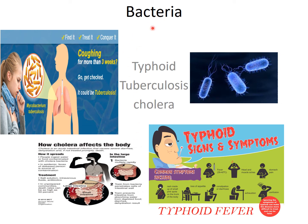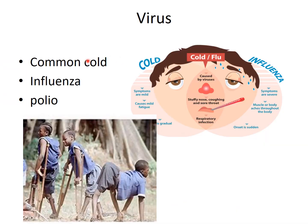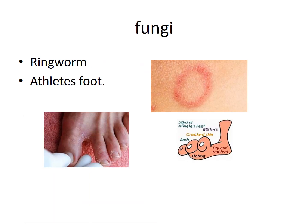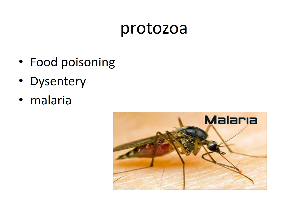Bacteria causes typhoid, tuberculosis, and cholera. Viruses cause common cold, influenza, and polio — common cold and influenza have similar symptoms but influenza is more severe. Polio is caused by a virus that affects children. Fungi cause ringworm and athlete's foot. Protozoa cause food poisoning and malaria.